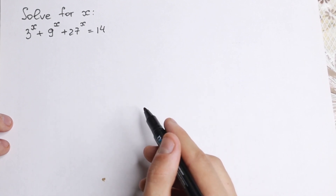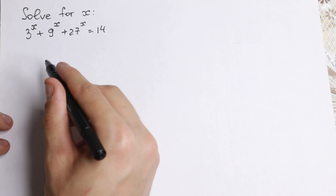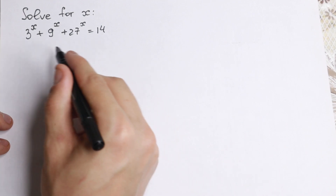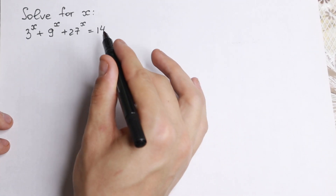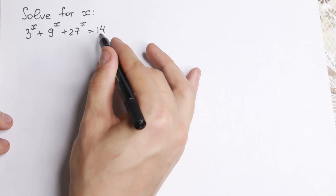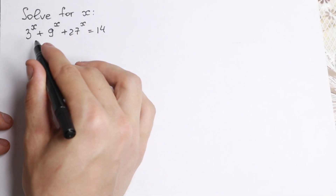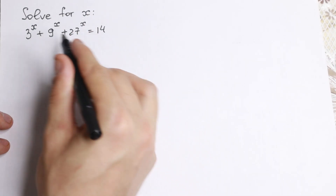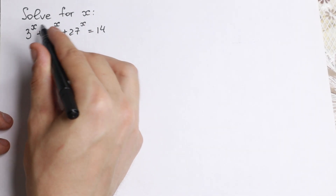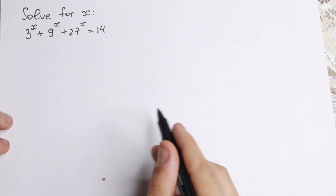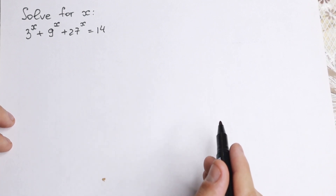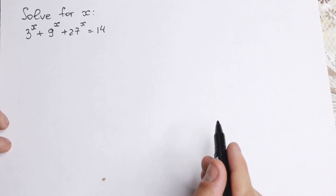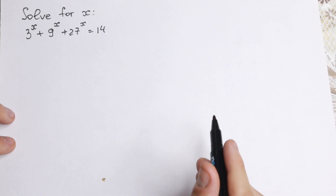On the first look, this equation is really hard because all the bases are different — 3, 9, and 27. Moreover, in the exponent it's a lot harder to solve this equation. But I want to show you a really good trick right here.